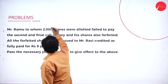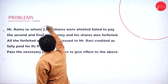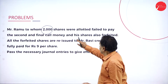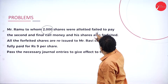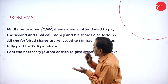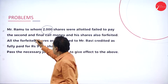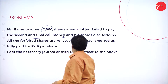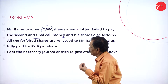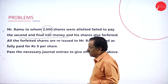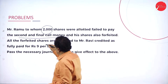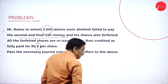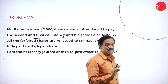Mr. Ramu holds 2,000 shares allotted. He fails to pay the second and final call money. His shares were forfeited. All the forfeited shares were reissued. Just to pass the entry — he has not asked for the balance sheet at all.